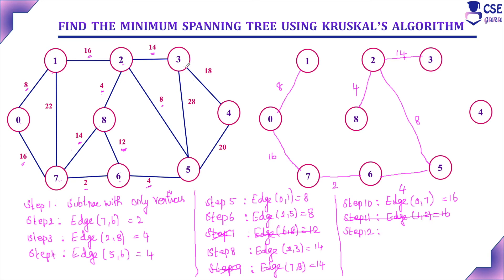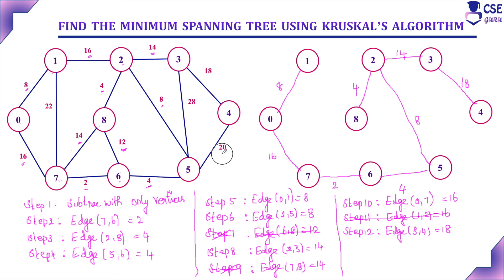The next minimum cost edge is 3,4 with cost 18. Including edge 3,4 does not form a cycle, so we include it. The next edge is 4,5 with cost 20 — including it forms a cycle, so we skip it. Edge 1,7 with cost 22 also forms a cycle and is excluded. Edge 3,5 with cost 28 likewise forms a cycle and is excluded.